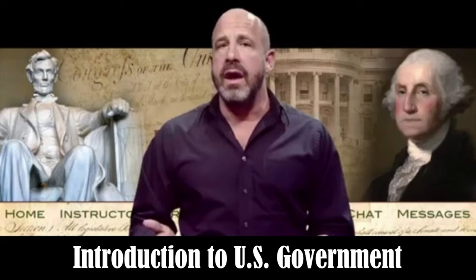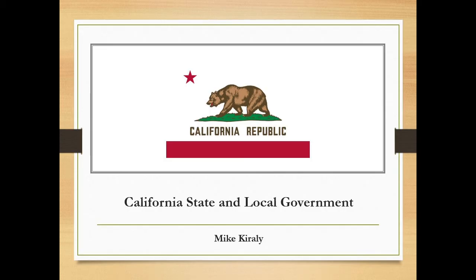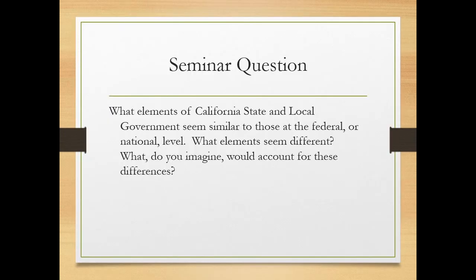Hello, this is Mike Corrale with the Introduction to United States Government course online. Welcome back. Today our lecture is California state and local government — and this is the last of our lectures for the course, so congratulations. Today's lecture begins by looking at the history of our state including its political evolution, then examines the ideas and institutions of state government compared to the national government. Our seminar question asks: what elements of California state and local government seem similar to those at the federal level, and what elements seem different?